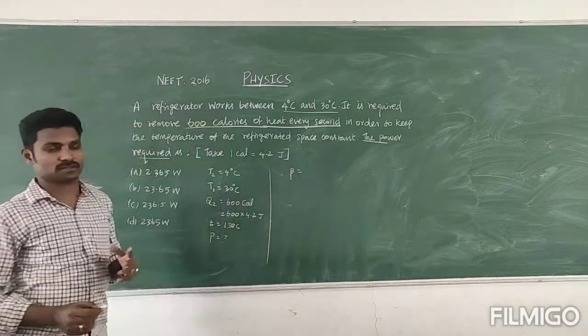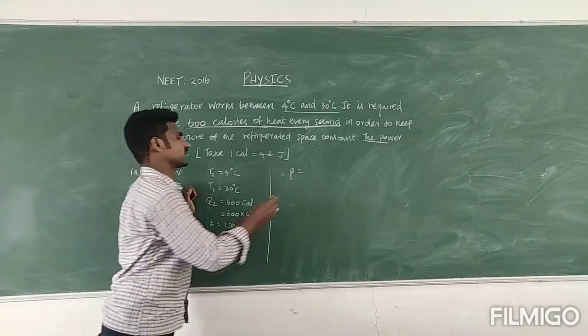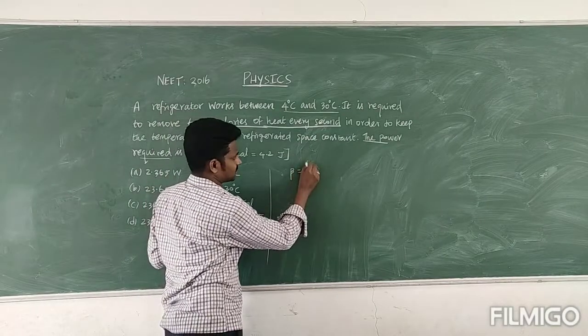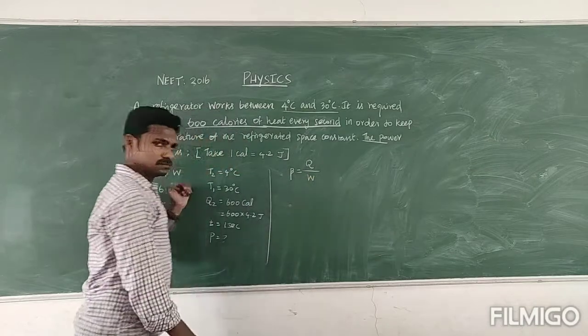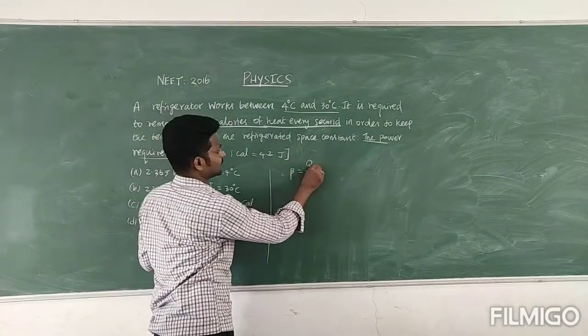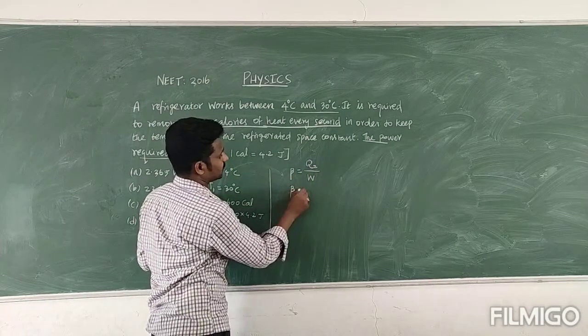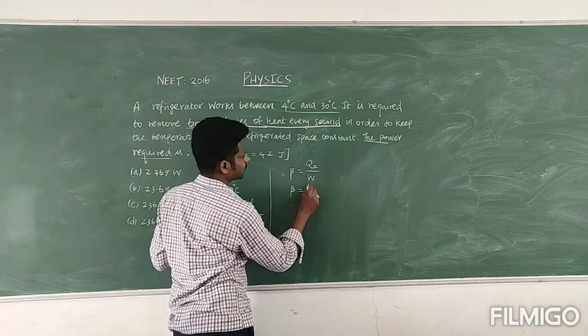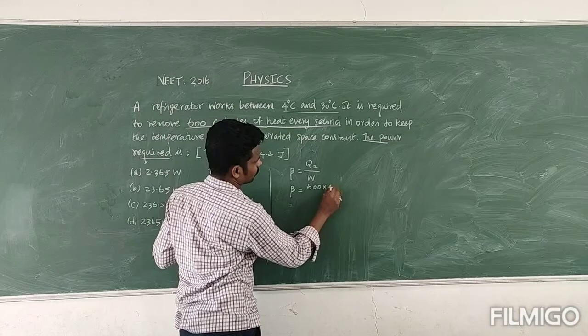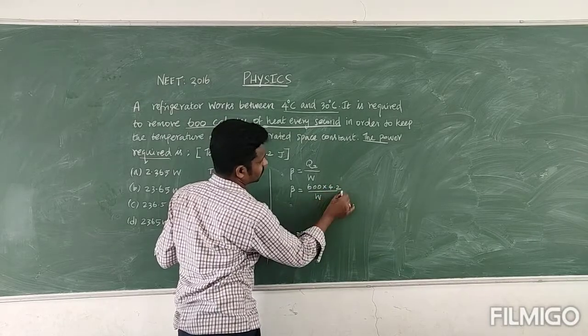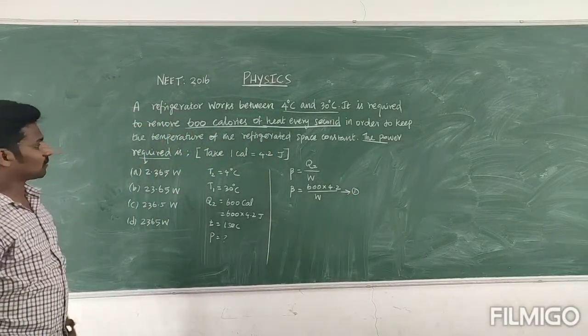So beta, we can say in two ways the formula. That one is the heat rejected, heat extracted from the contents of the refrigerator, to the work done by the external agent. So this we can write as Q2. So we can write beta is equal to Q value, that is 600 into 4.2, then divided by work done. So this is equation number 1.